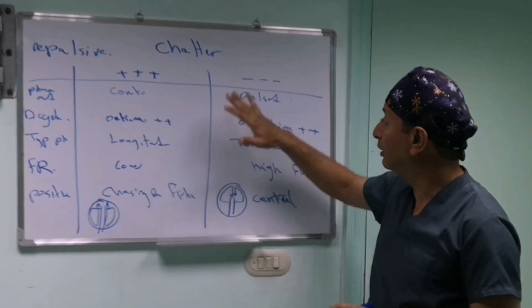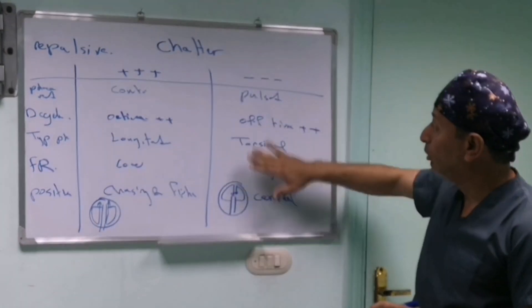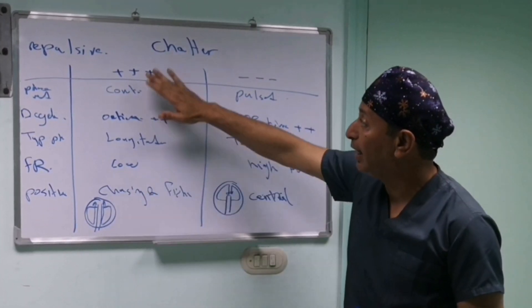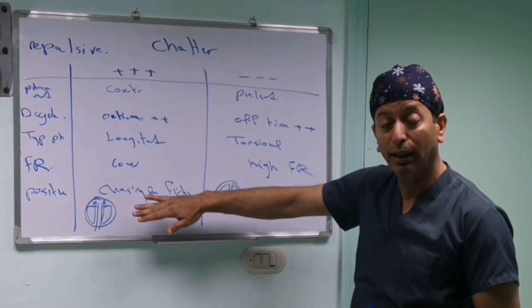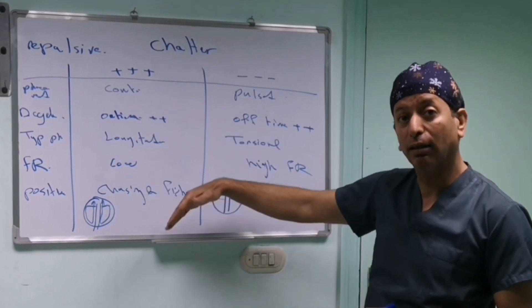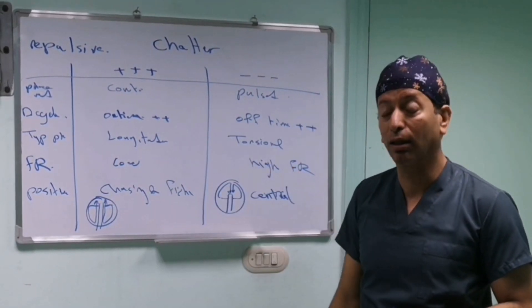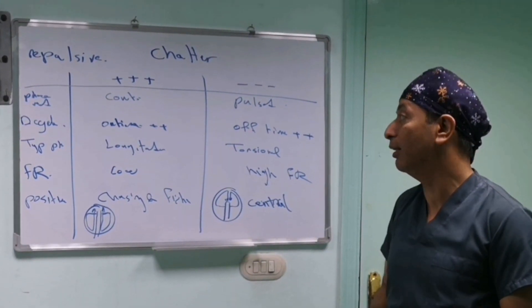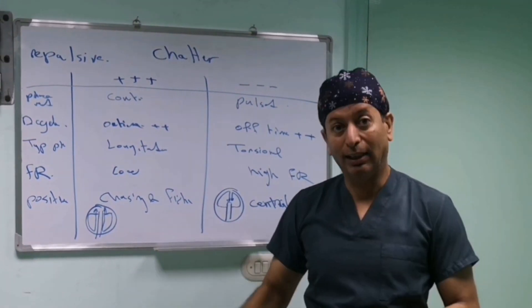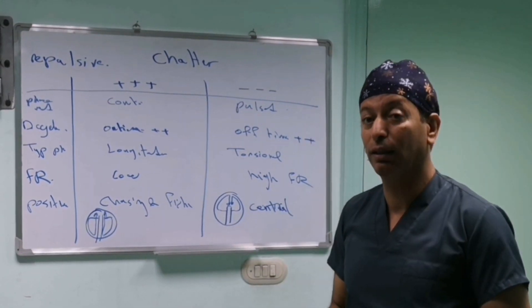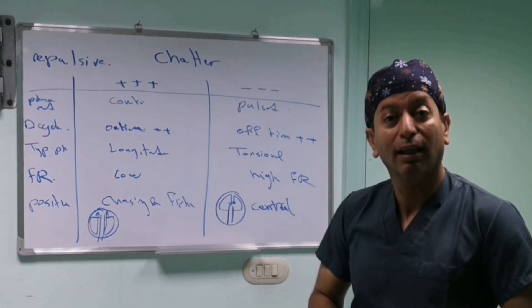These are the measures you can use to reduce your shutter, and these are the mistakes that will make the shutter be accentuated and more aggressive. That's about it. Next time we'll see you when we describe something else. Thank you.